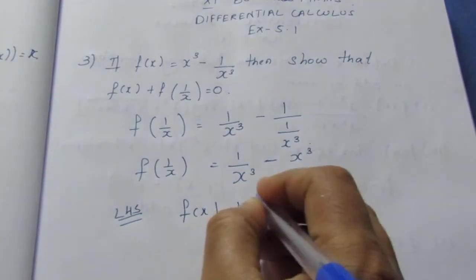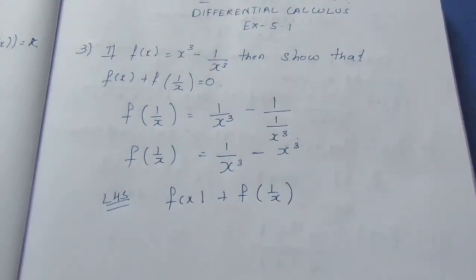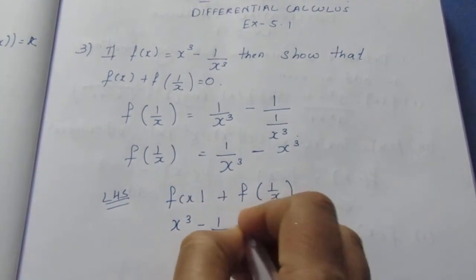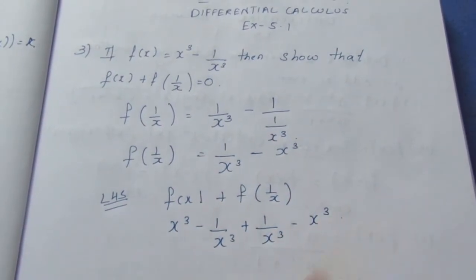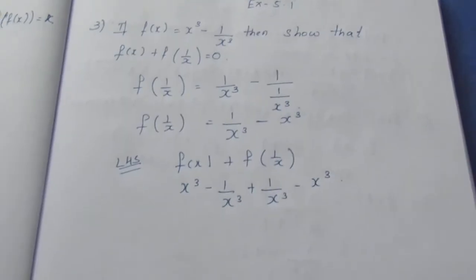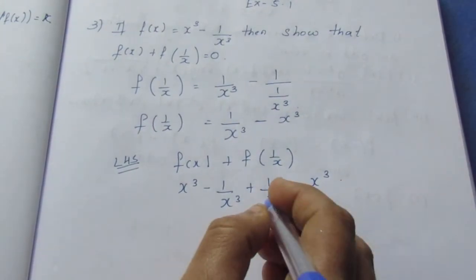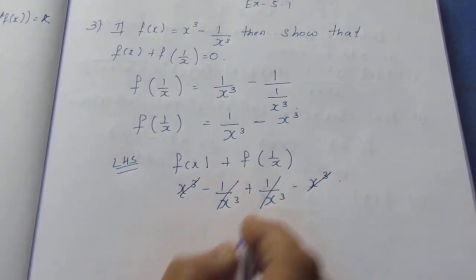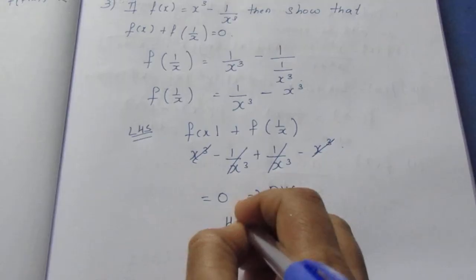Substituting the values: f of x plus f of 1 by x equals (x cube minus 1 by x cube) plus (1 by x cube minus x cube). The plus and minus terms cancel, giving the value equal to 0, which equals our RHS. Hence proved.